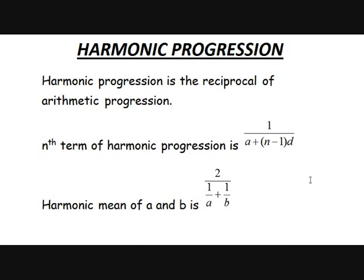To find the harmonic mean of two terms a and b: since HP is the reciprocal of AP, the corresponding AP terms are 1/a and 1/b. Their arithmetic mean is (1/a + 1/b) / 2. The harmonic mean is the reciprocal of that arithmetic mean, so it equals 2 / (1/a + 1/b). It's a bit confusing, but that's the definition.